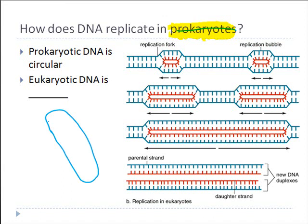DNA replication in prokaryotes is very similar to what we see in eukaryotic DNA, in that we still have to have a helicase unwind and break apart the hydrogen bonds. You still have to have DNA polymerase — one type makes an RNA primer, and then the second type of DNA polymerase attaches to that RNA primer and begins synthesis.